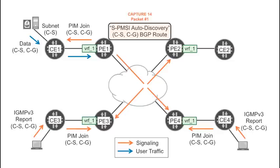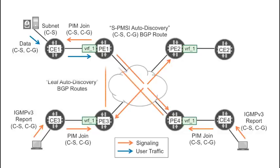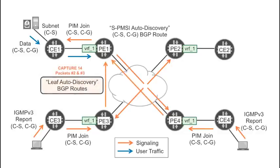All the downstream PEs interested in becoming leaves of this P-tunnel should notify PE1. PE3 and PE4 have downstream receivers for this C-S, C-G flow, so each of them sends a leaf auto-discovery BGP route targeted to PE1. The key here is that the route sent by PE3 is different from the one sent by PE4. Since the routes are different, the route reflector does not perform any path selection — both routes are reflected to PE1, where they are imported in VRF1.